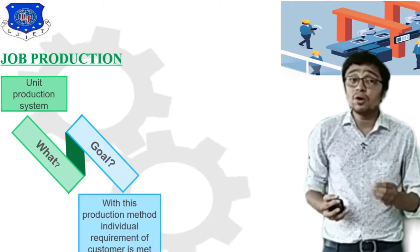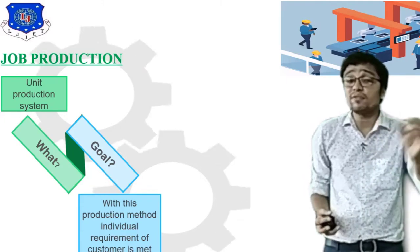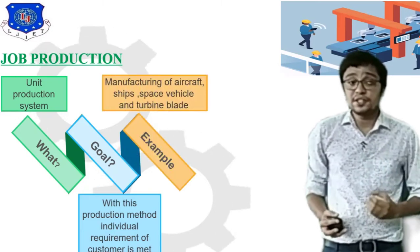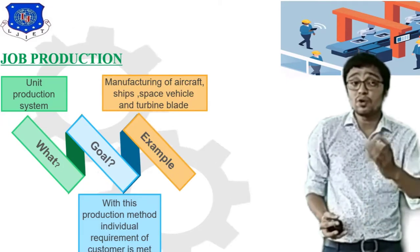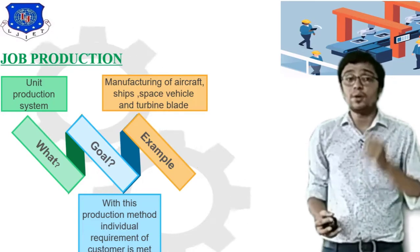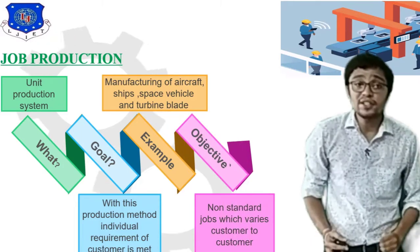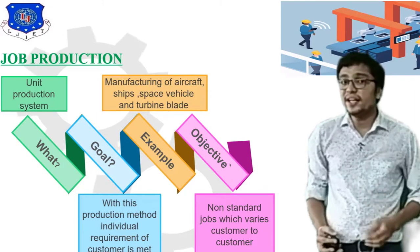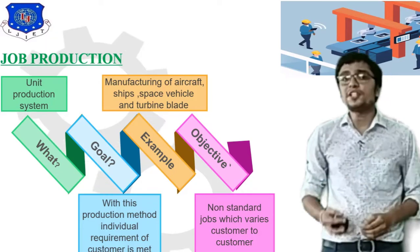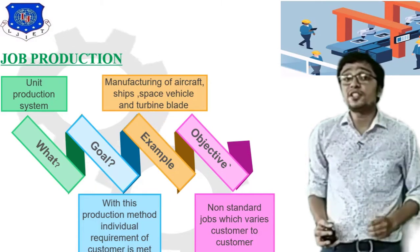The goal of Job type production is to manufacture non-standard jobs which vary from customer to customer. Examples of this production system include manufacturing of aircraft, space vehicles, and turbine blades — all heavy duty work pieces. Job type production evaluates and depends on only one job at a time.